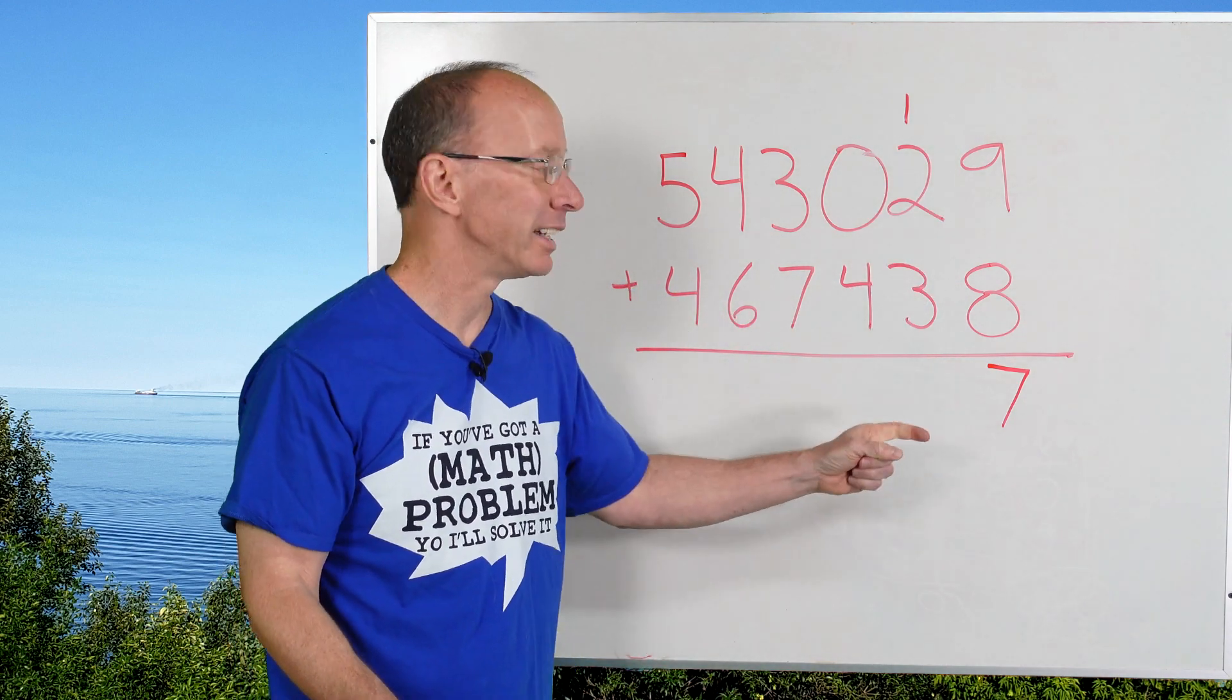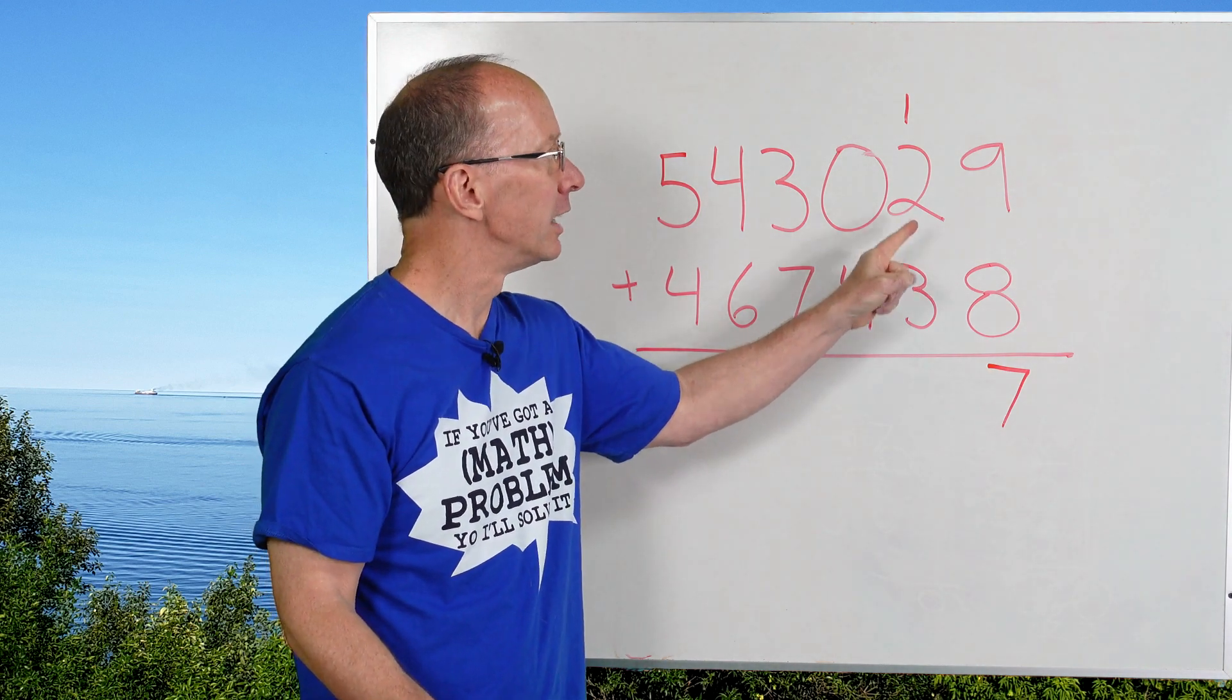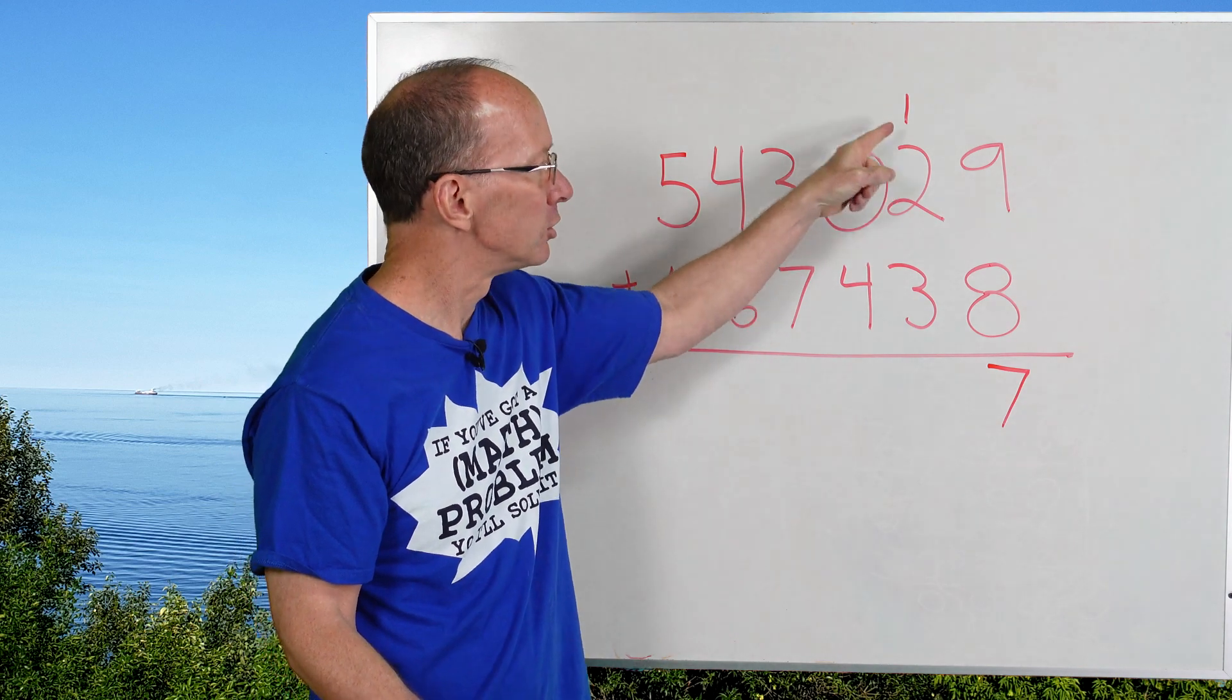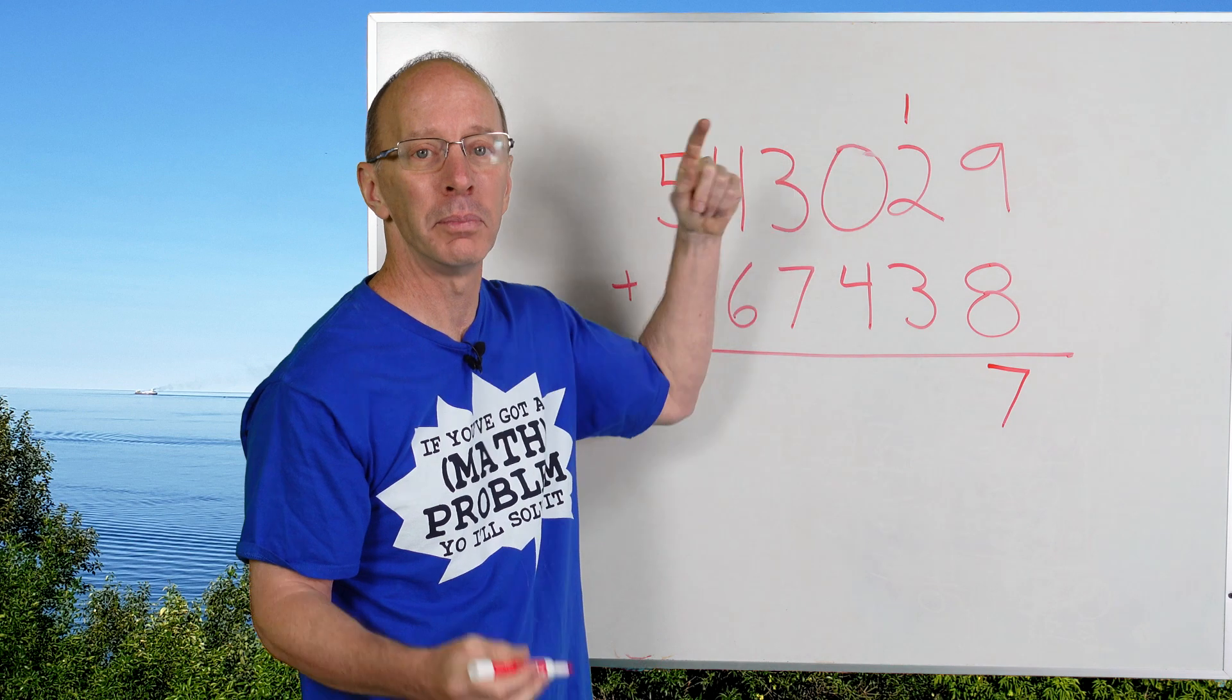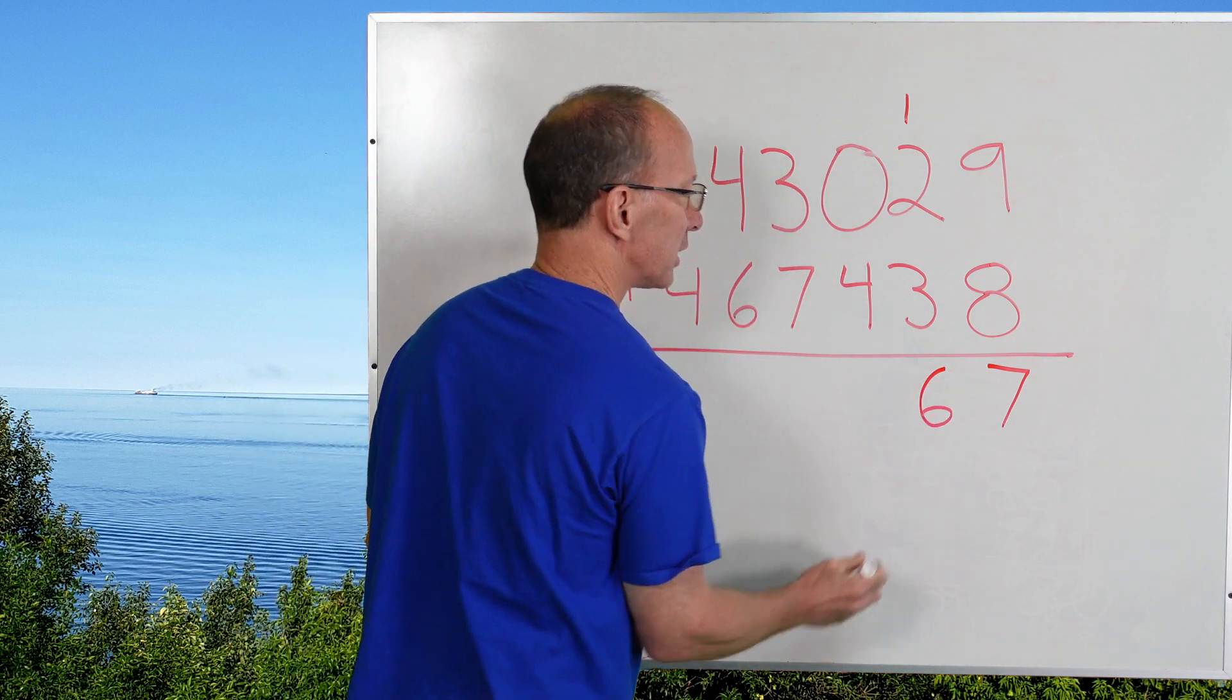So then I start adding the 10s. 3 plus 2 is 5. Don't forget about that number. Sometimes people forget about that number that they just added there. Don't forget about that. So it's 3 plus 2 is 5, plus the 1 would be 6. So put the 6 right there.